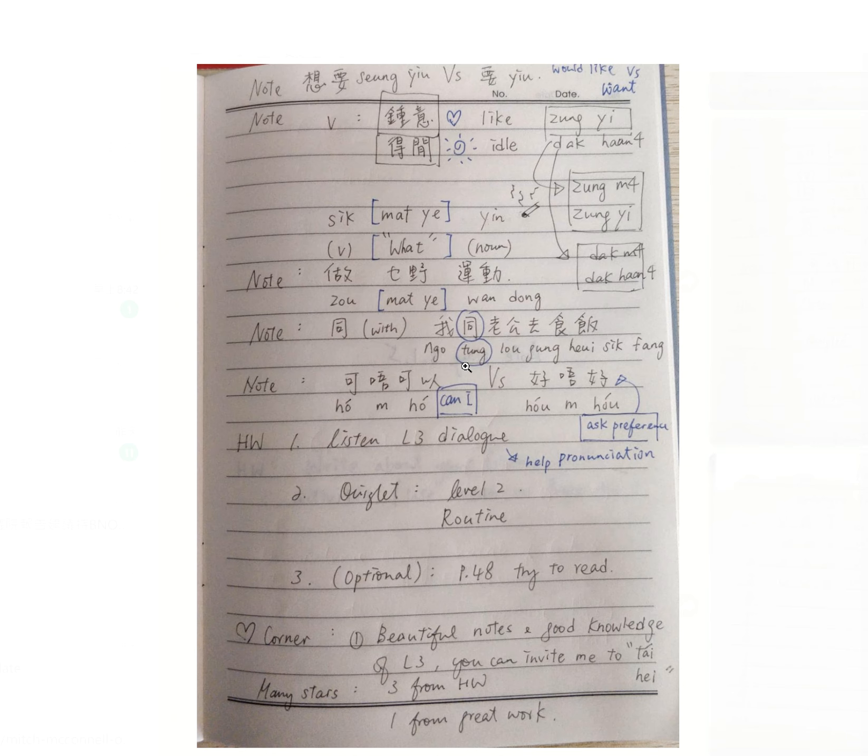This is another structure that is different from English. 我同, so I and, 我同老公 and 我同Koreen 上廣東話堂. For example, 上堂, you know, take a lesson. To be precise, then you put 上廣東話堂.